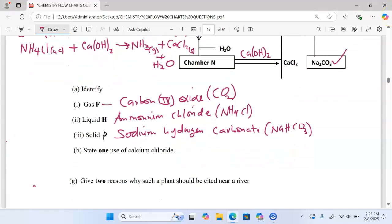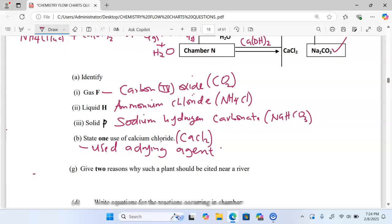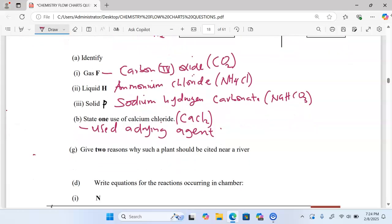State one use of calcium chloride. This is one of the by-products that is not recycled in the Solvay process and it has a wide range of uses. One of the uses is that it is used as a drying agent. It can also be used on roads to defrost ice. Give two reasons why such a plant should be sited near a river. Remember, a lot of water is required to cool the carbonator.